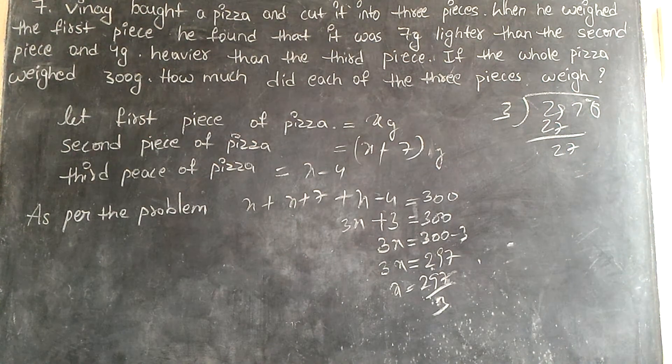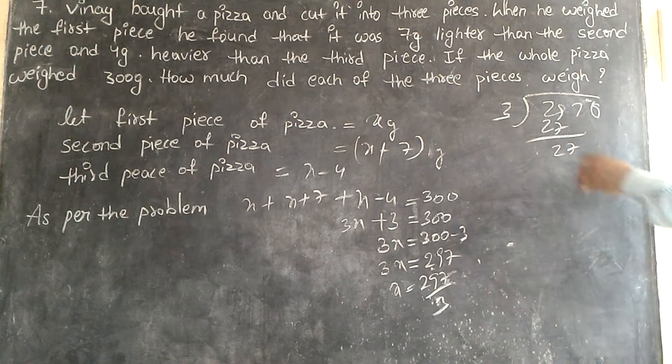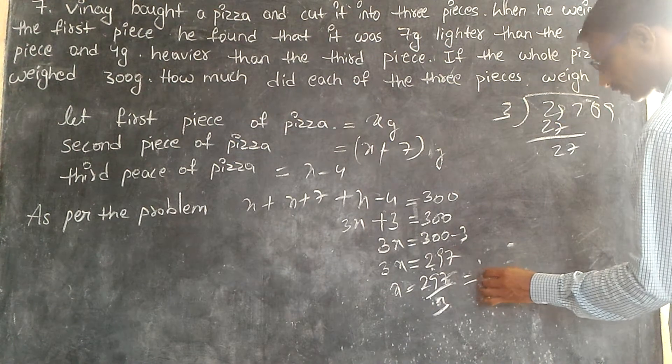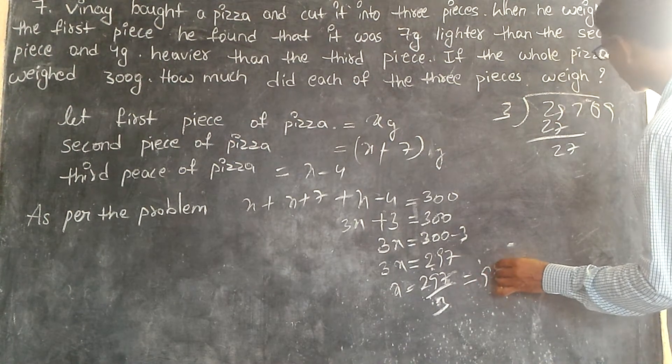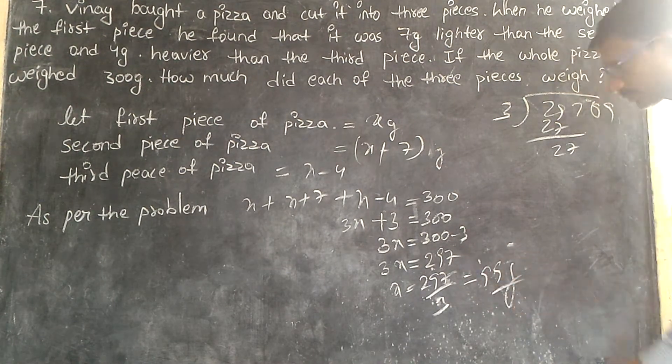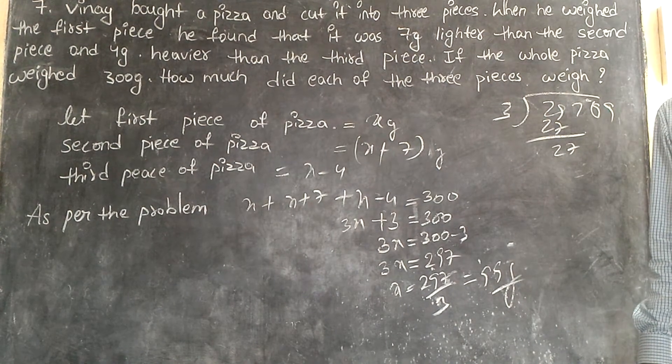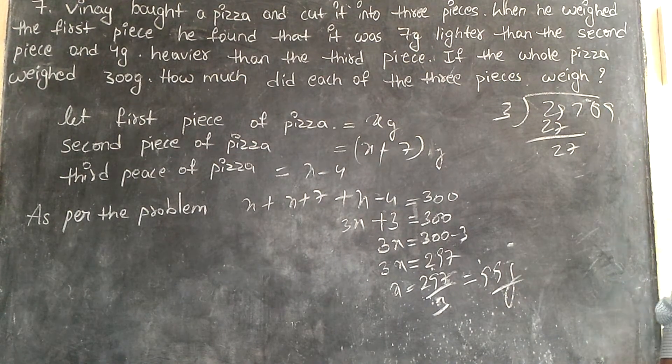How much is left here? 3X. So how much will we get? 99, 9, 9 grams. The first piece is how much? 99 grams.